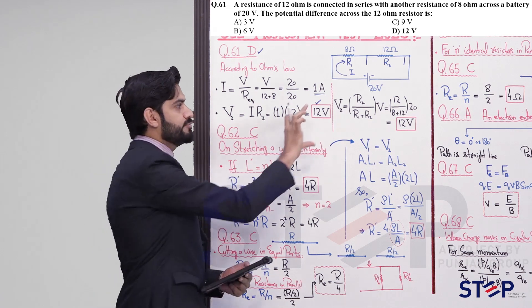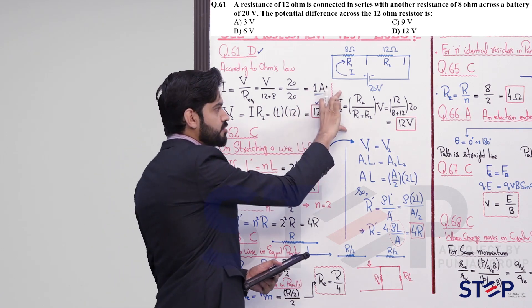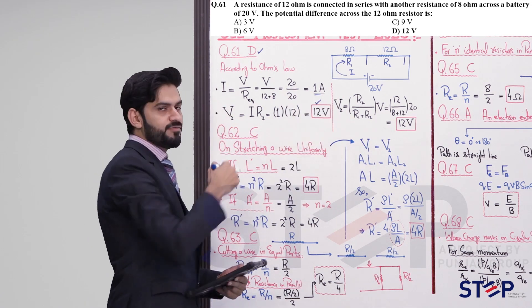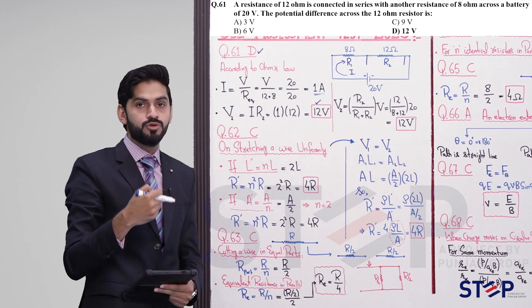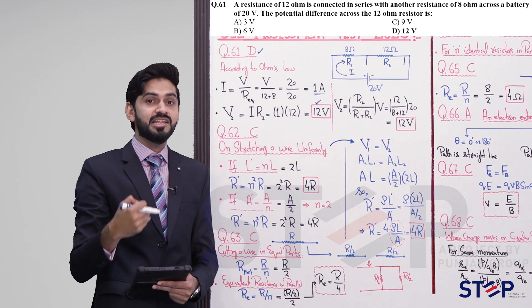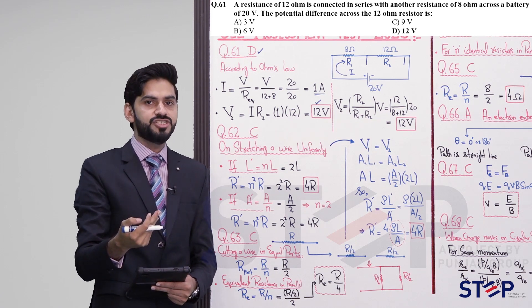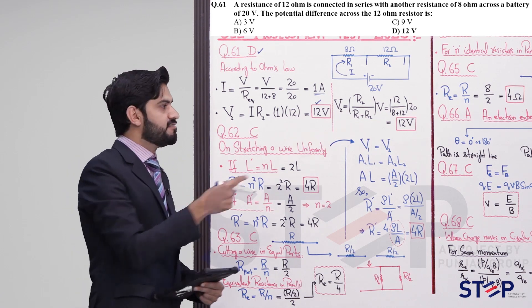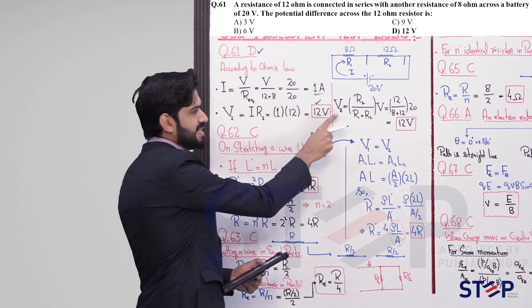So two methods are available, but the simpler shortcut one-step method is the voltage divider rule. If you see step-by-step calculation, the shortcut method is better.